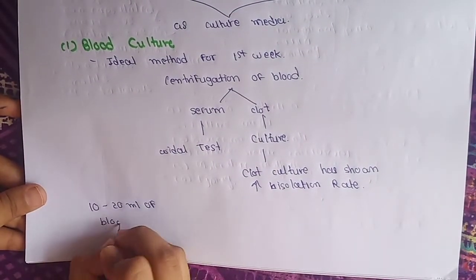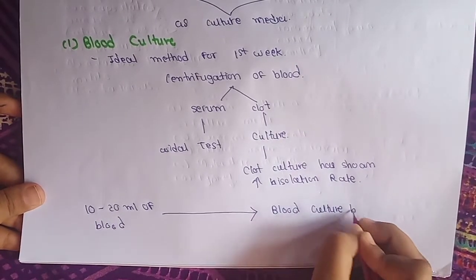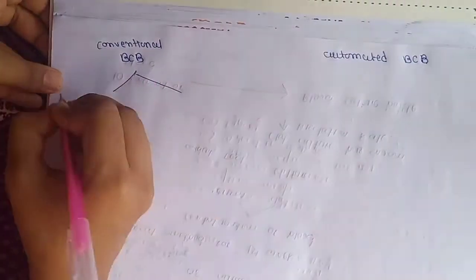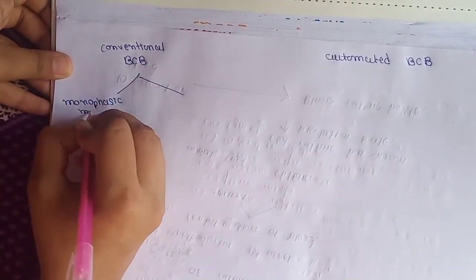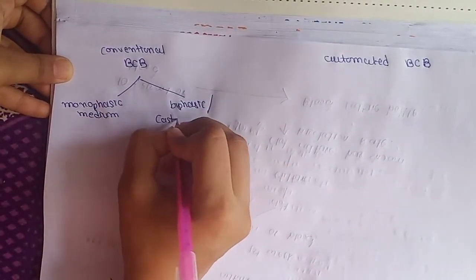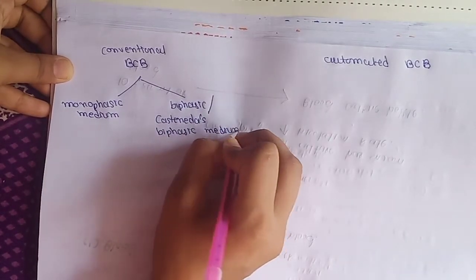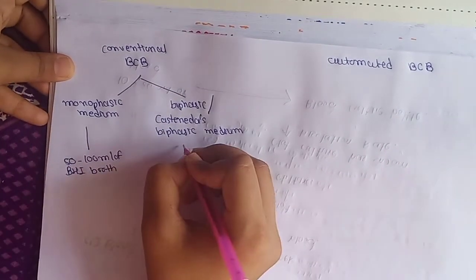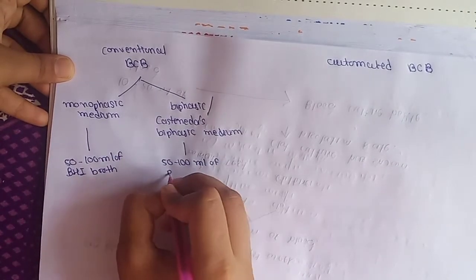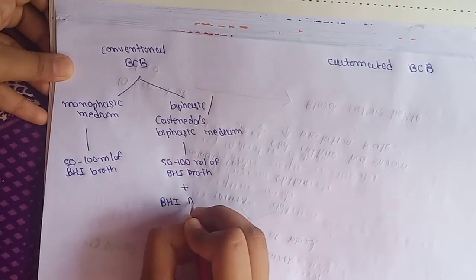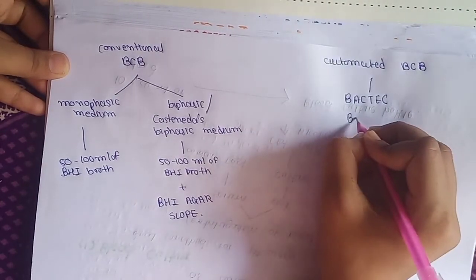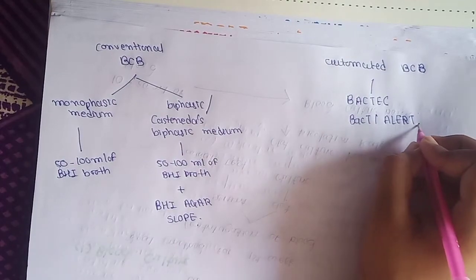Ten to 20 mL of blood is directly injected into blood culture bottles. We have both conventional and automated blood culture bottles. Conventional blood culture bottles include monophasic medium and biphasic medium (Castaneda's medium). Monophasic medium contains 50–100 mL of brain heart infusion broth; biphasic Castaneda's medium contains 50–100 mL of brain heart infusion broth plus a brain heart infusion agar slope. The automated blood culture bottle includes systems such as BACTEC or BacT/ALERT.